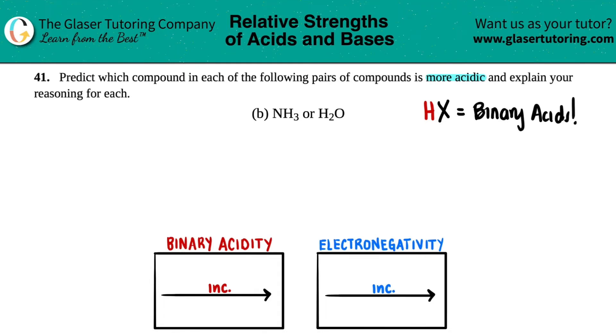What's the trend for binary acidity? As you go across a period, your acidity will increase. When we do this trend, we don't care about where the hydrogens are because that's the same between the two compounds. We look at where nitrogen and oxygen are on the periodic table - nitrogen comes first, then oxygen. As you go from left to right, you increase in acidity, so oxygen would be more acidic than nitrogen.